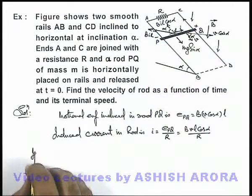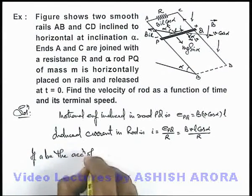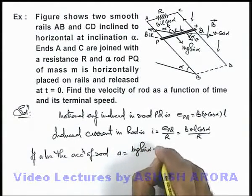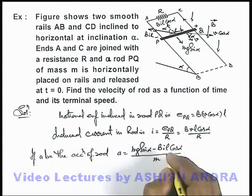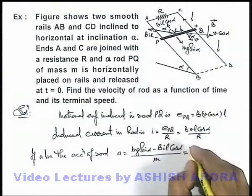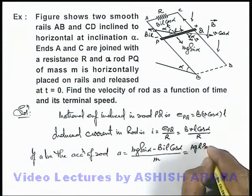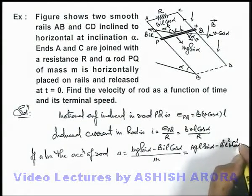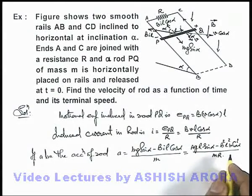The upward component of this magnetic force on the rod is BiL·cos(α). So the acceleration of the rod can be written as a = (mg·sin(α) − BiL·cos(α)) / m. Substituting the value of current as BvL·cos(α) / R, the acceleration becomes a = (mgR·sin(α) − B²L²v·cos²(α)) / (mR).